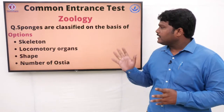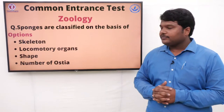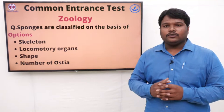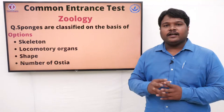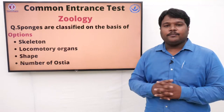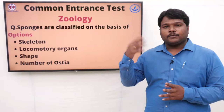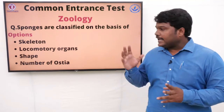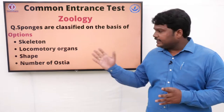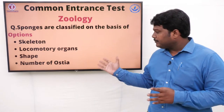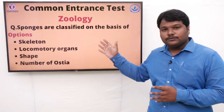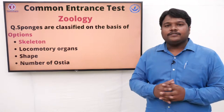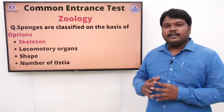Question 6: Sponges are classified on the basis of. Some sponges depend upon the soil, some depend upon the water — that freshwater sponge is Spongilla. Options: A) Skeleton, B) Locomotory organs, C) Shape, D) Number of ostia. The right answer is skeleton. On the basis of skeleton, the different types of sponges are classified.